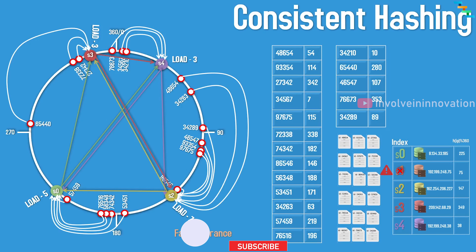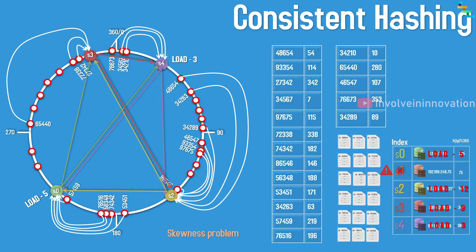However, there's a skewness issue. Because of large angular gaps between certain servers on the ring, the load is not equally shared. For example: server instance 0 has load 10, server instance 2 has load 12, server instance 3 has load 9, and server instance 4 has load 3. The data load is not equally distributed across the four instances — this is a problem we need to mitigate.